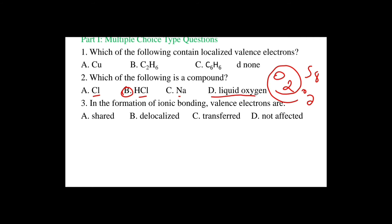Question number three: in the formation of ionic bonding, balanced electrons are — A, shared; B, delocalized; C, transported; D, not affected. Ionic bonding is formed by losing and gaining of electrons. Metals always lose electrons to form cations, and non-metals always gain electrons to form anions.